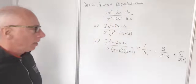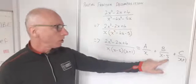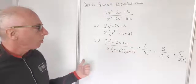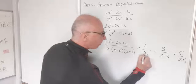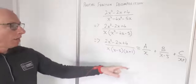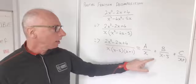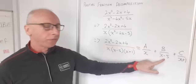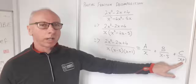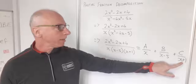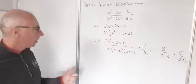Since these are all linear terms I can go straight into the Heaviside cover-up method. I need x equals 0 to eliminate the x term, x equals 5 to eliminate the x minus 5 term, and x equals minus 1 to eliminate the x plus 1 term.